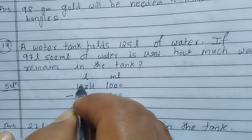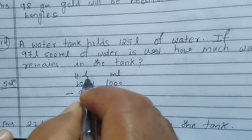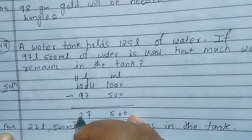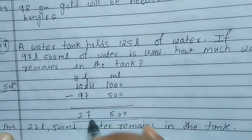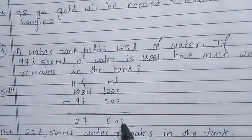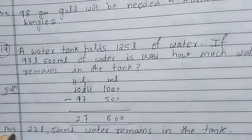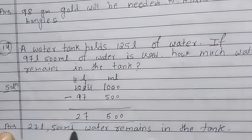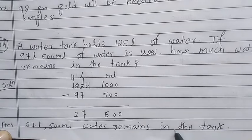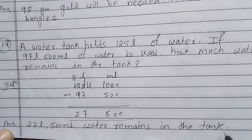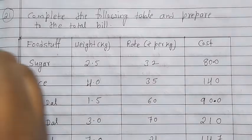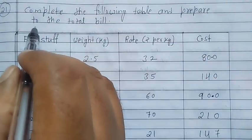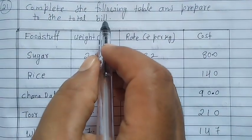Continue subtracting in the liters column: borrow again, giving 14 − 7 = 7 and 11 − 9 = 2, so the result is 27 liters and 500 milliliters. The answer is 27 liters 500 milliliters of water remains in the tank. Question 21: Complete the following table and prepare the total bill.